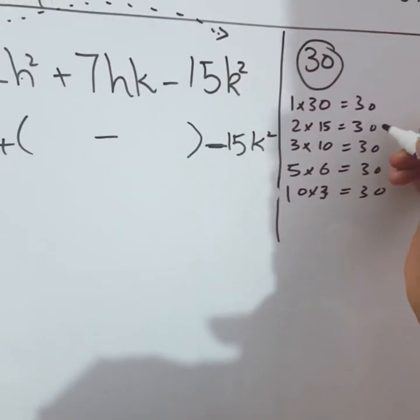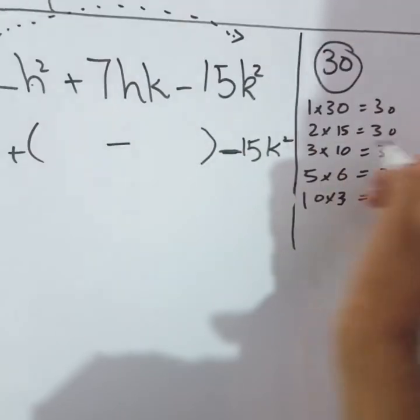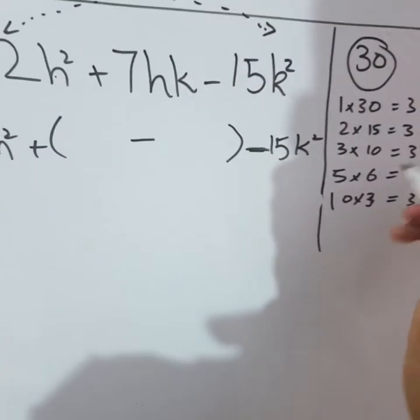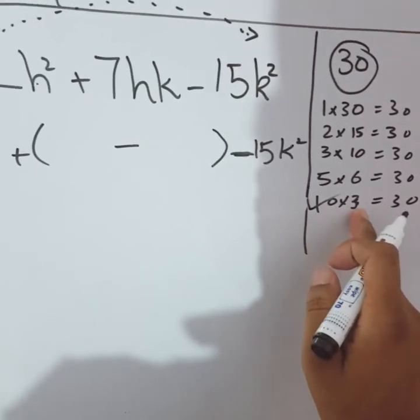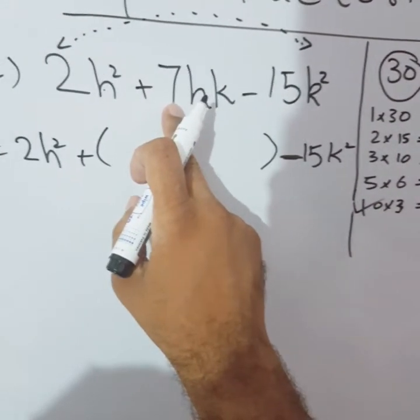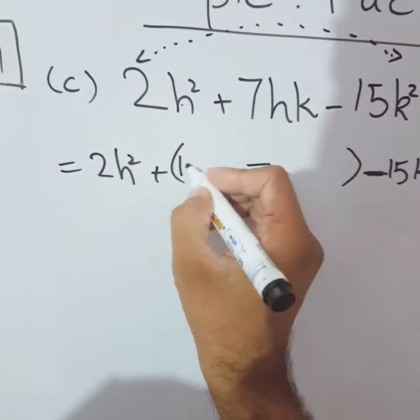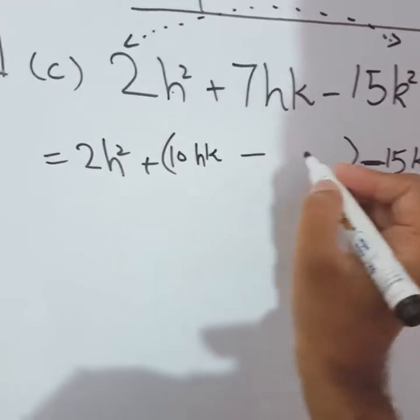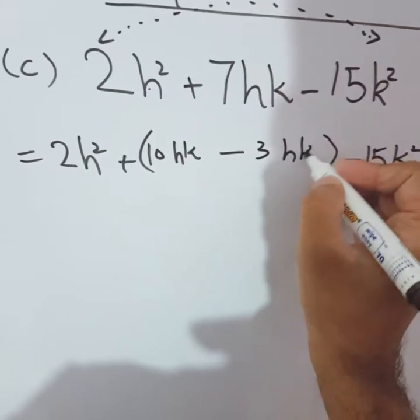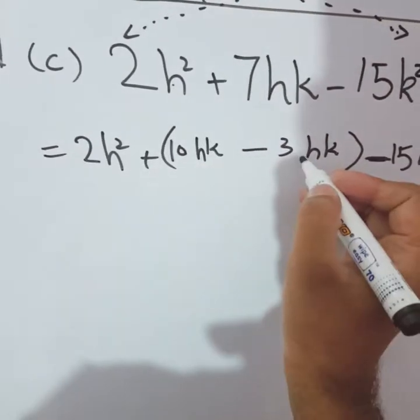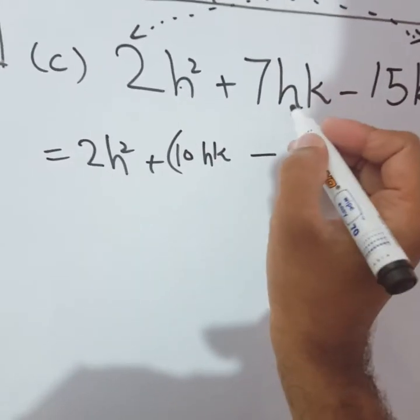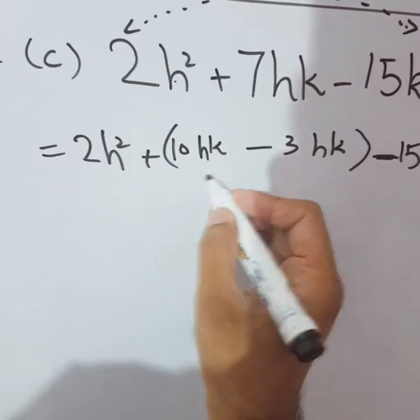From these pairs, we have to pick the one whose subtraction gives us 7. So 10 and 3 is the right pair. If we subtract 3 from 10, we get 7. That's why instead of 7, we will write 10hk minus 3hk. We write hk because if we subtract 3 from 10, we get 7, and 7 had h and k with it above, so h and k will be written here too.